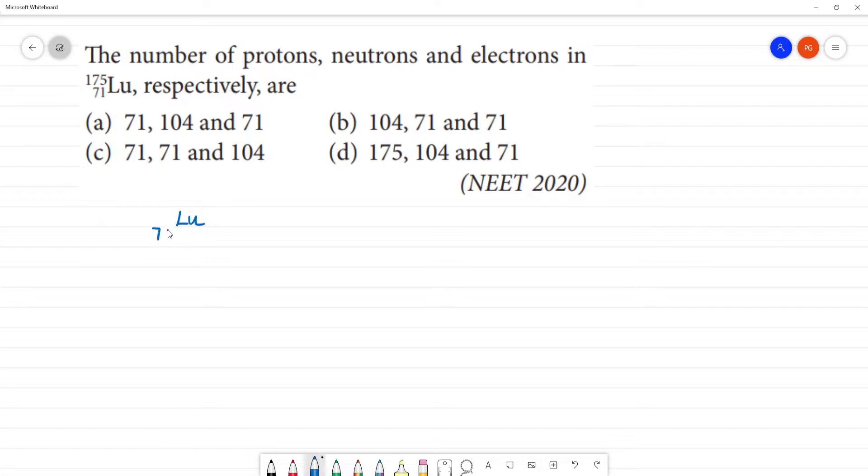Lutetium-71 has atomic number 71 and mass number 175. We know that atomic number is equal to number of protons, so the number of protons is 71. Number of electrons is the same, 71 protons to 71 electrons.